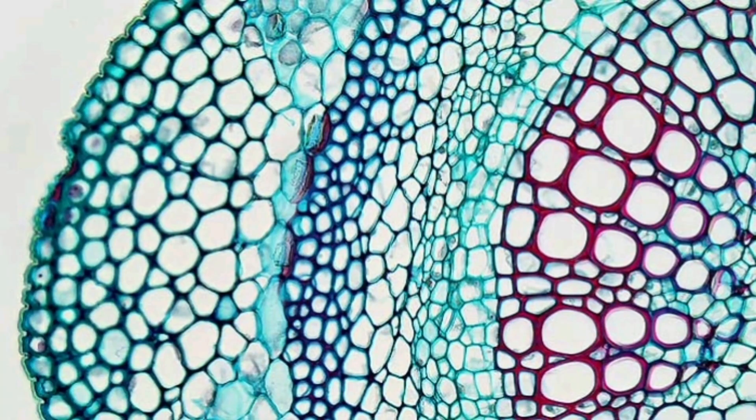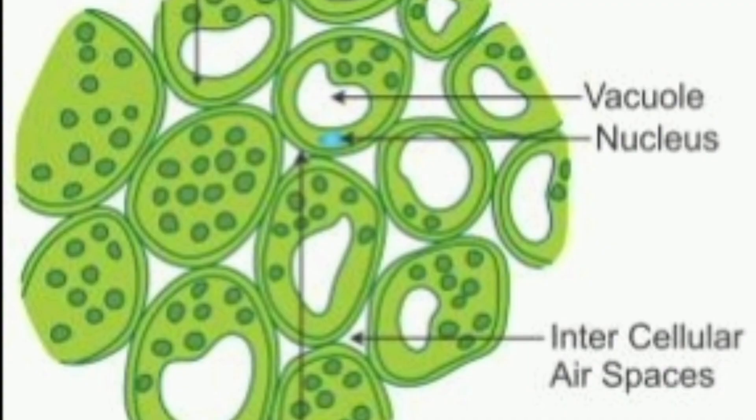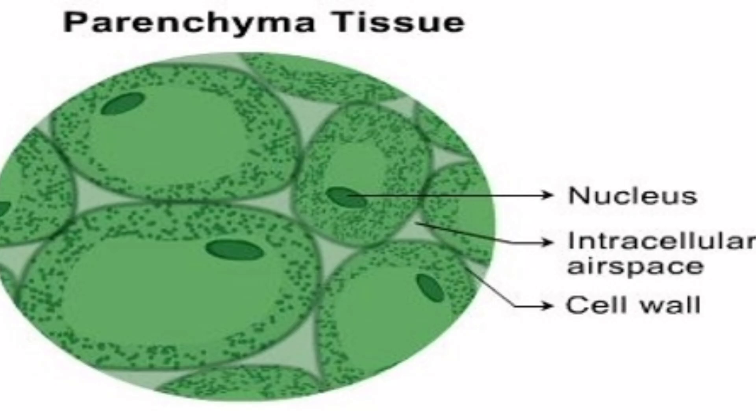They are loosely packed cells that are isodiametric in nature. They have a central vacuole and a nucleus. Thus, in this figure, you can see that parenchyma are living tissues with living cells present containing nucleus, cytoplasm, and vacuole.